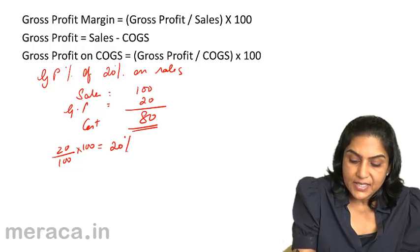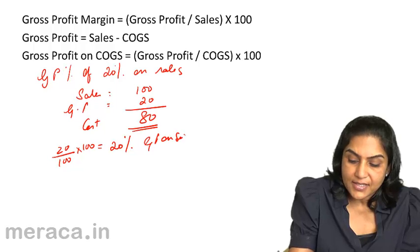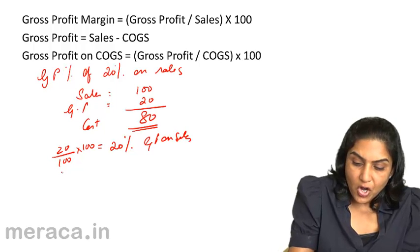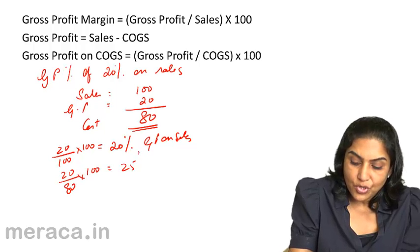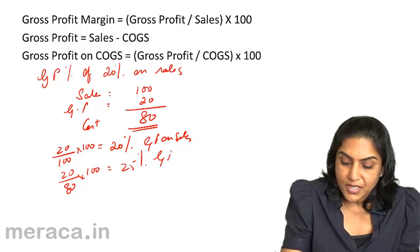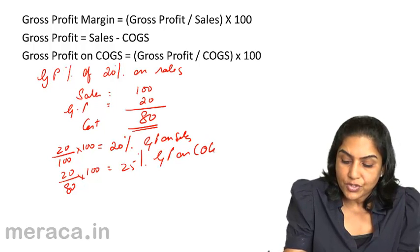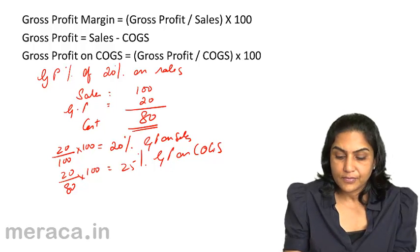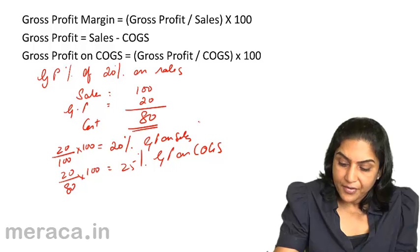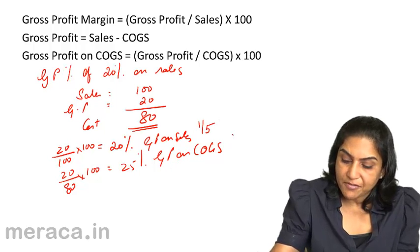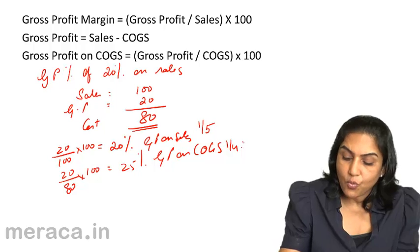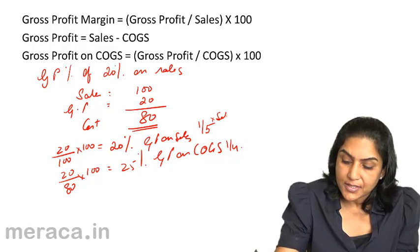20% is your GP on sales. GP on cost would be 20 by 80, which is equal to 25% — that is the GP on cost of goods sold. So 20 by 100 equals 1/5th of sales, and 25 by 100 equals 1/4th of cost of goods sold.